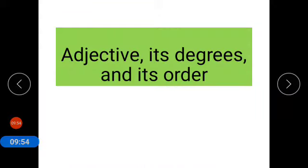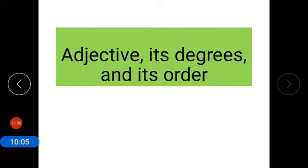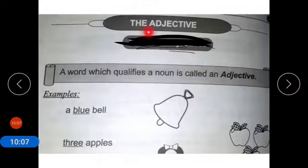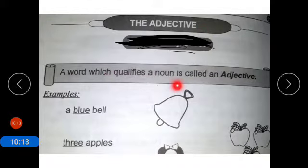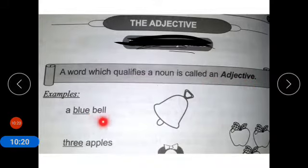Now coming to adjectives, their degrees, and their order. An adjective is a word which qualifies a noun. Examples: a blue bell — blue is modifying bell; three apples — three is modifying apples.